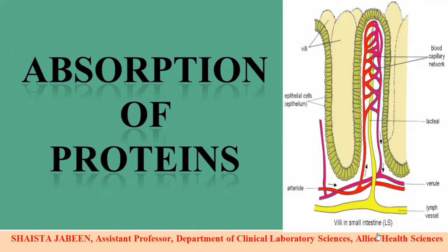The process of absorption in the human body takes place in the small intestine. The small intestine has a lumen, and its walls are made up of epithelial cells. These epithelial cells have circular inner foldings known as villi, which in turn have numerous inner foldings also known as microvilli. The function of villi and microvilli is to increase the surface area for the process of absorption.